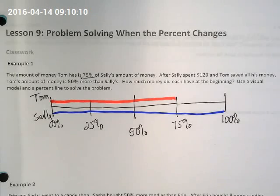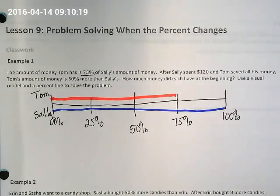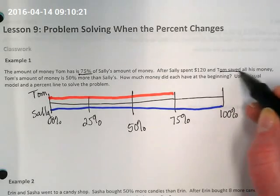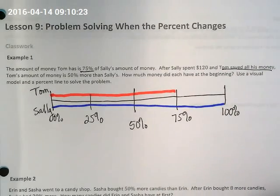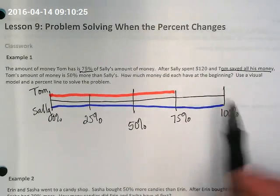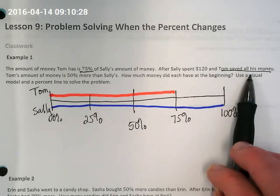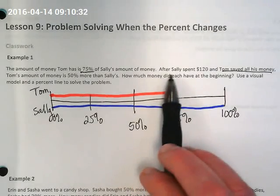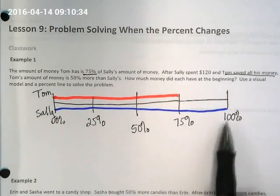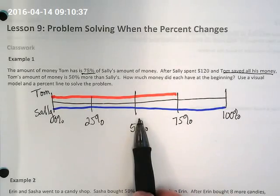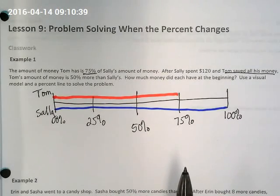After Sally spent $120 and Tom saved all his money — is Tom's number line staying the same or changing? Tom saved all his money so he's not spending anything, so his stays at 75%. But Sally spent money, so her line is going to go down. We don't know how much yet — we know she spent, so she doesn't have the 100% anymore.